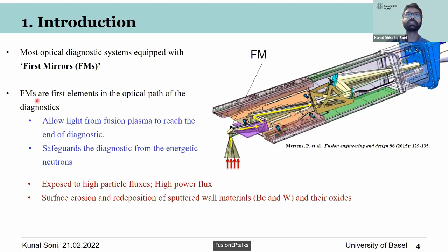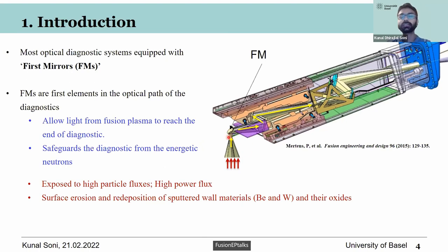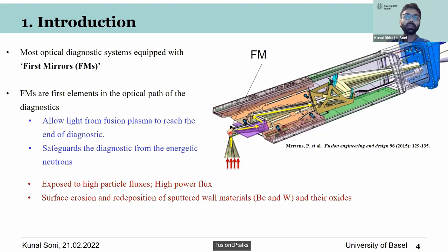These first mirrors are crucial because they are the front-facing components of the diagnostic systems and look directly into the fusion reaction. They allow light from the fusion plasma to reach the diagnostics and safeguard the diagnostics from energetic neutrons. However, being the first elements in the optical pathway, they are exposed to high particle and power fluxes, undergo constant surface erosion from charge-exchanged neutrals from the fusion plasma, and receive constant deposition of wall materials — particularly beryllium and tungsten sputtered from the first wall and the divertor.